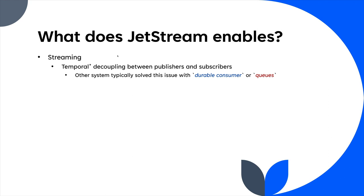Other systems generally use queues as a way of saying: put messages in a queue and they wait there until a client comes around to get them. A durable consumer is where other systems say: this consumer needs to be able to get these messages, so I'll keep the messages until this consumer can pick them up. NATS does have a feature like this, but instead of using durable consumers or queues for streaming, NATS simply saves your messages into what it calls a stream.